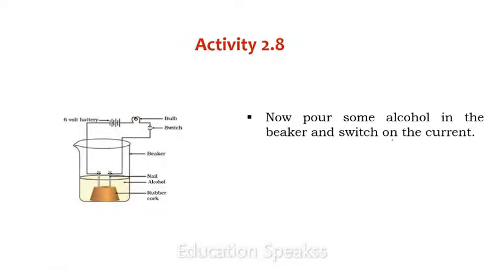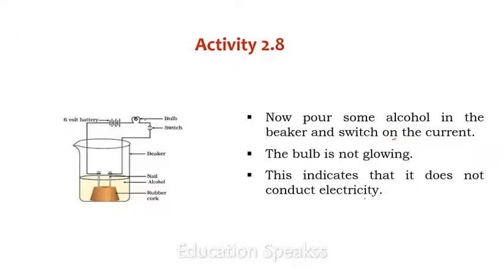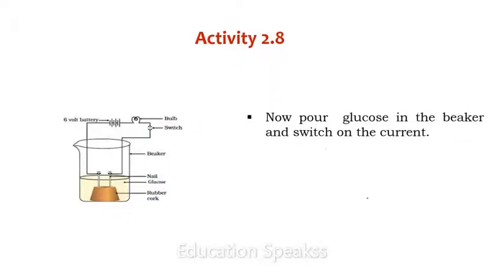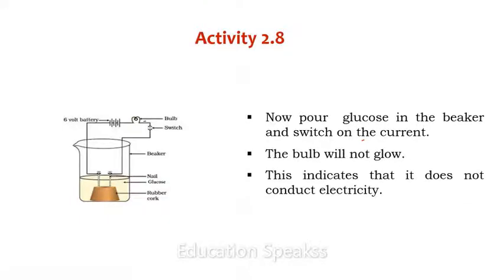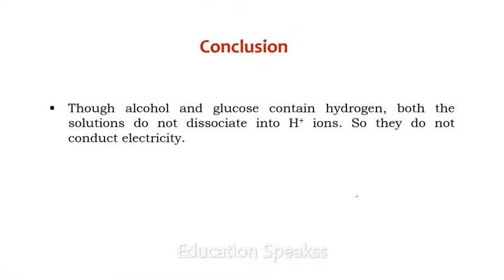Now pour some alcohol in the beaker and switch on the current. As we see here, the bulb is not glowing. This indicates that alcohol does not conduct electricity, because alcohol solution does not dissociate into hydrogen ions. Similarly, when you pour glucose in the beaker and switch on the current, the bulb will not glow. Like alcohol, glucose also does not dissociate into hydrogen ions. Though alcohol and glucose contain hydrogen, both solutions do not dissociate into hydrogen ions, so they do not conduct electricity.